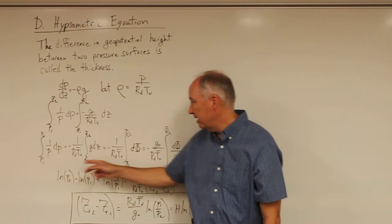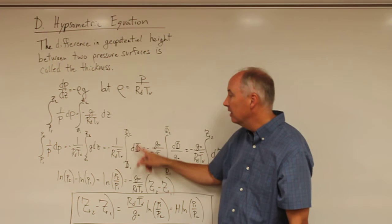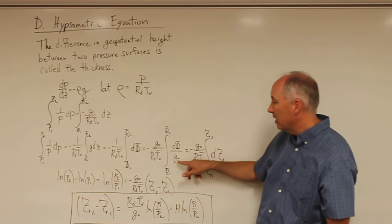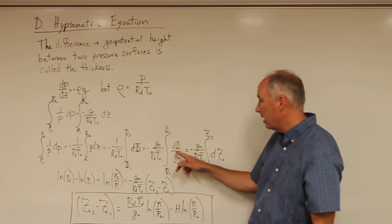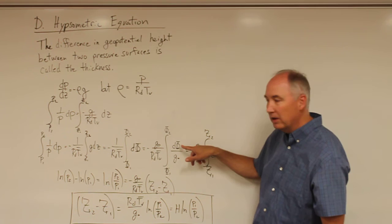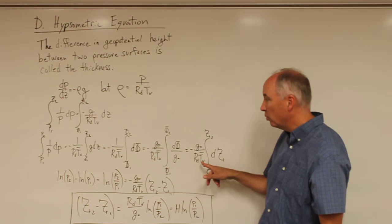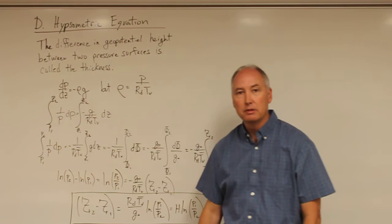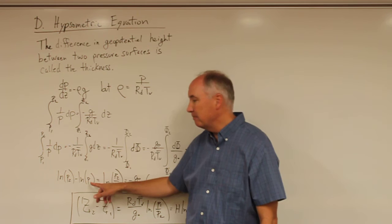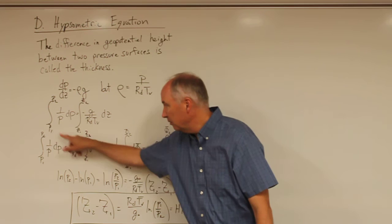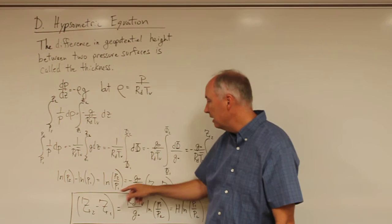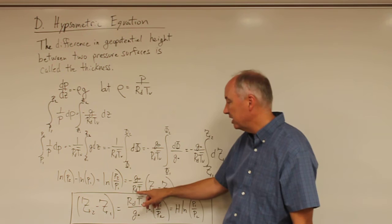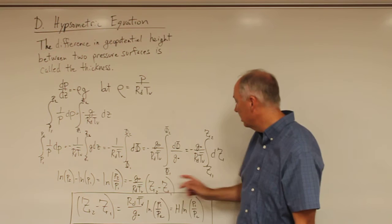The integral of (1/p)dp equals 1 over r_d times the average virtual temperature for the layer times the integral of geopotential. Dividing the geopotential by constant gravity g0 gives us the integral of geopotential height, defined as the geopotential divided by gravity at sea level. Integrating both sides: the left side yields the natural logarithm of p2 minus the natural logarithm of p1, which by log identities equals ln(p2/p1). This equals minus g0, a constant, over r_d, over the average virtual temperature — all constants — so the integral on the right becomes trivial.